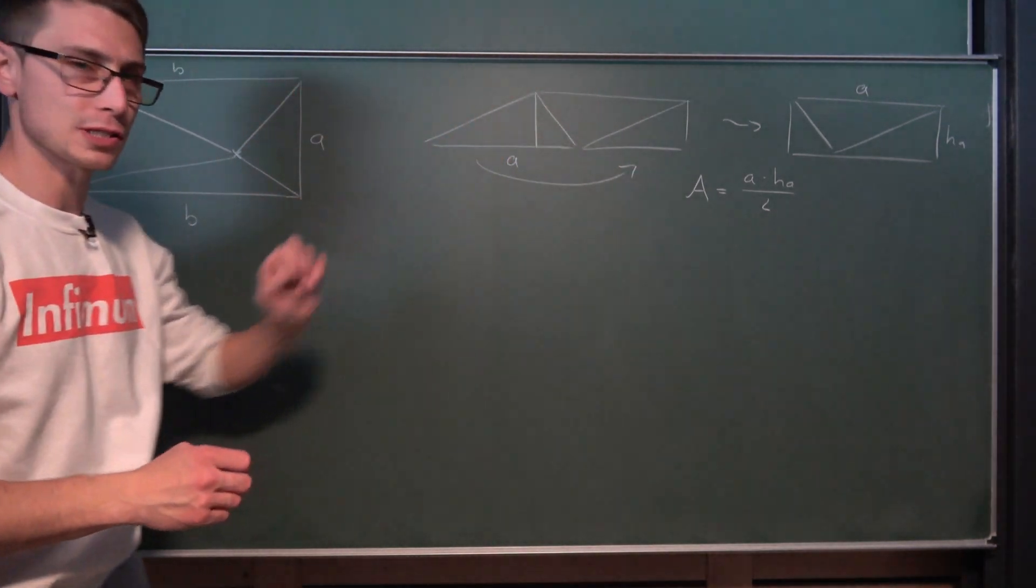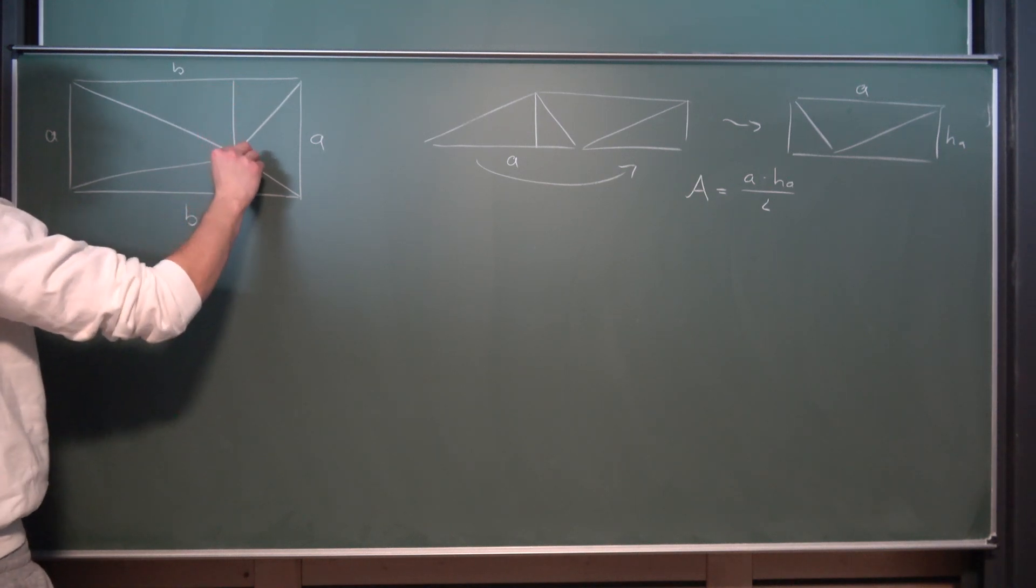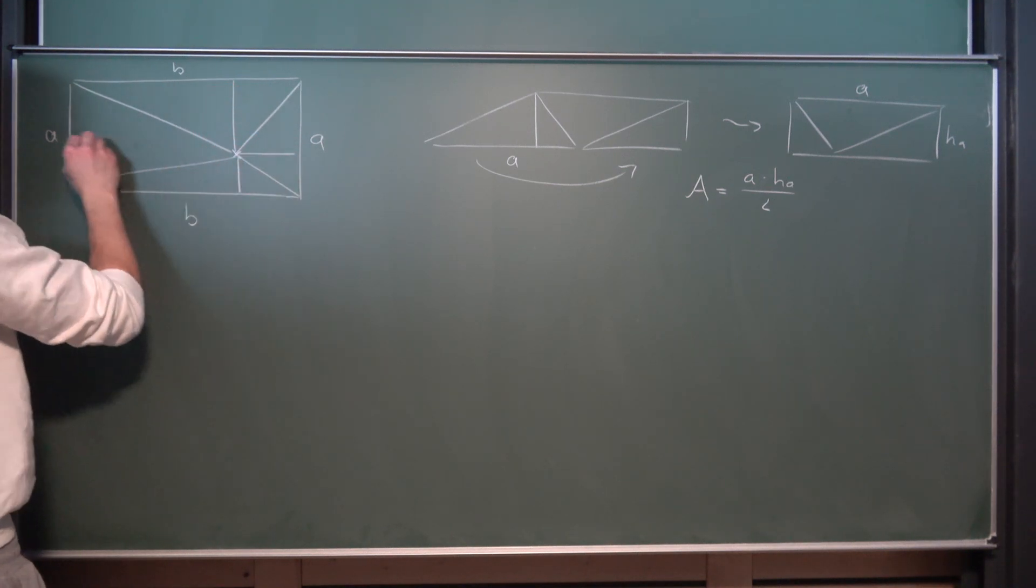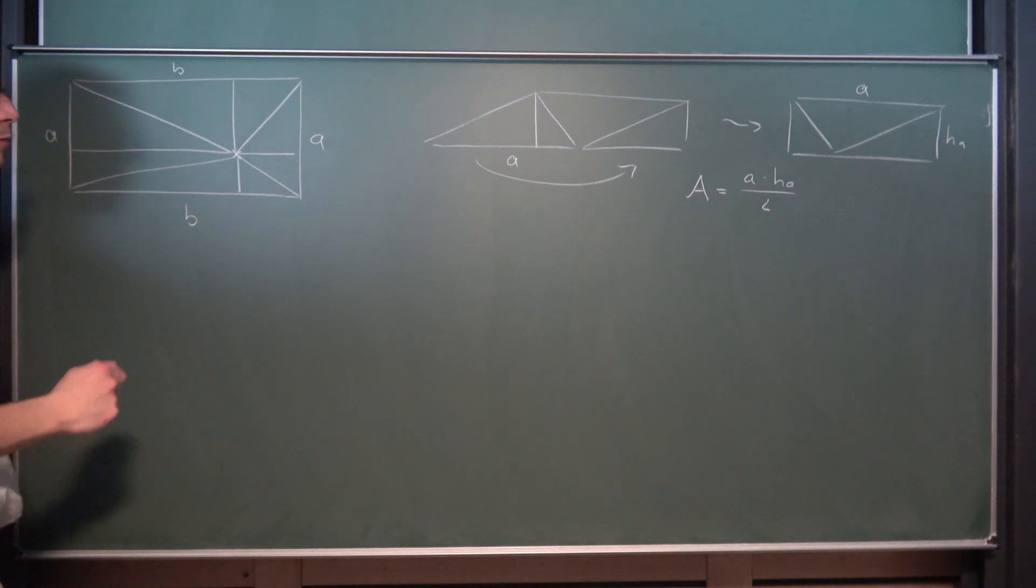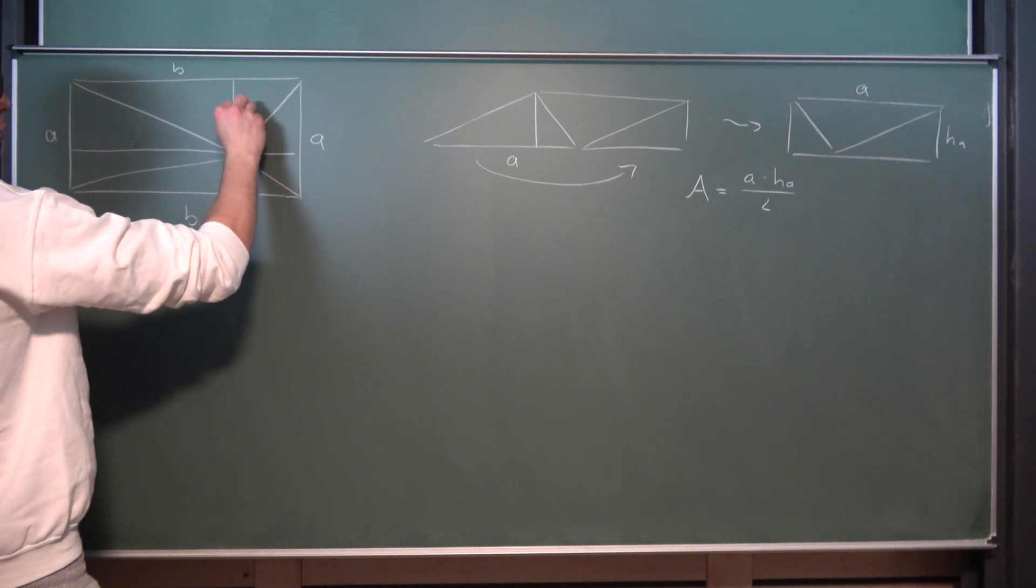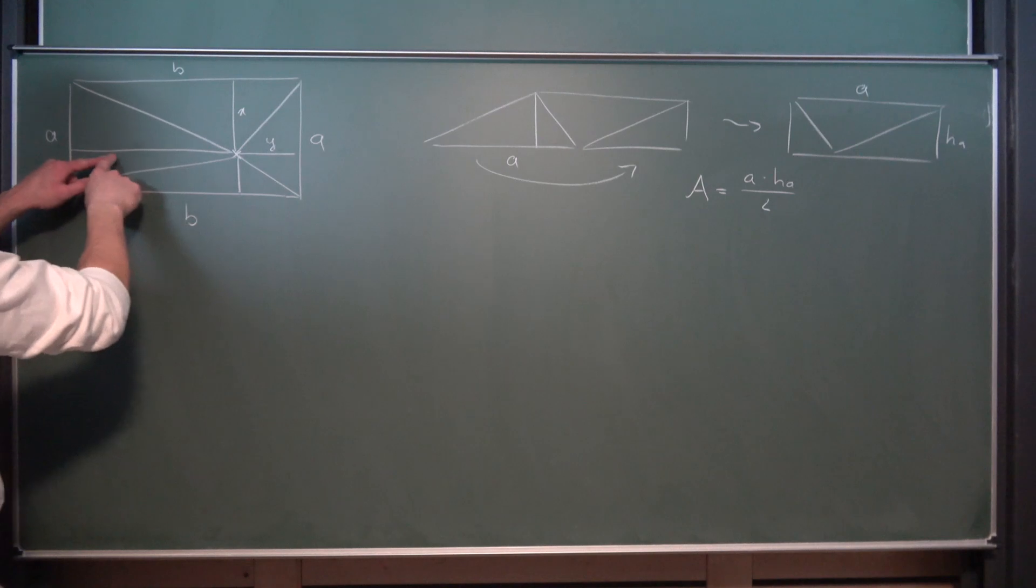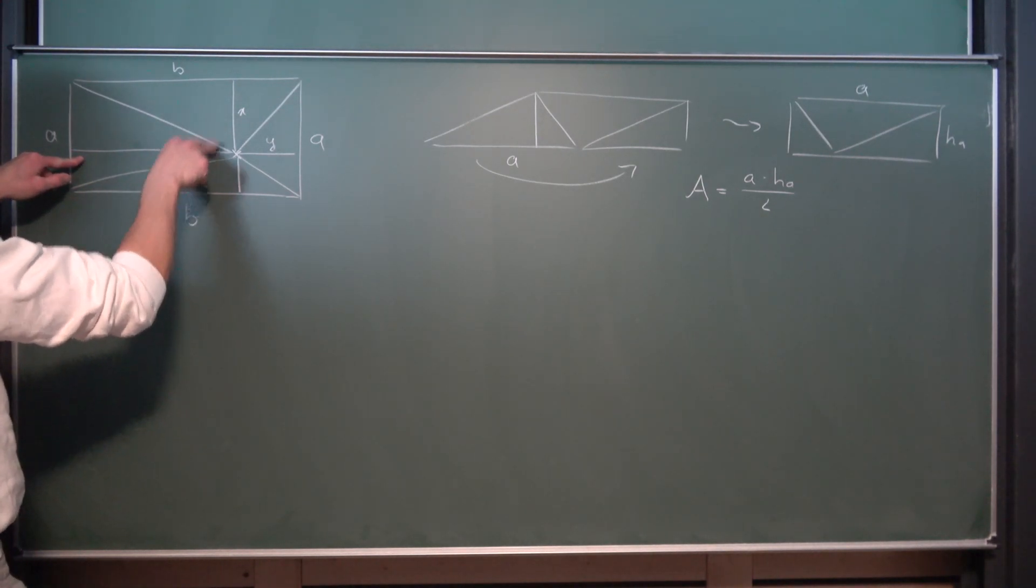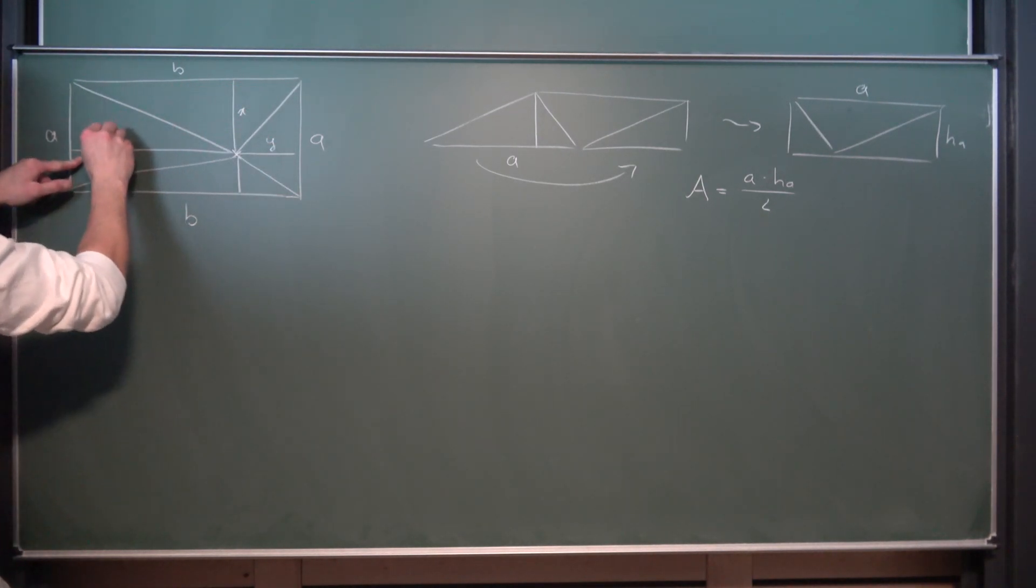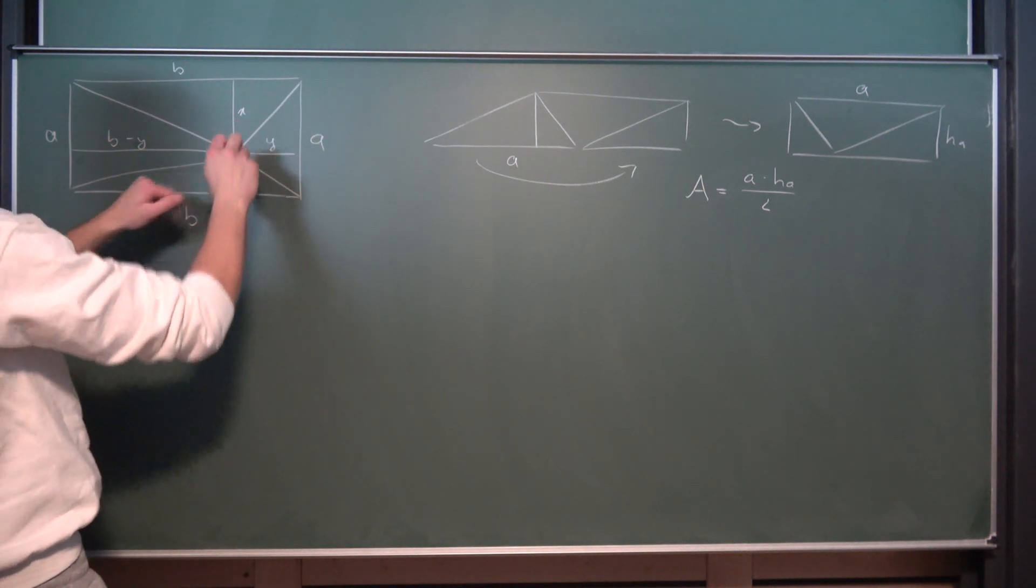And we are going to use this logic here. So what I'm going to do is I'm going to introduce a height here, a height here, a height here and a height here. And now this makes up for a nice little sketch. Now this height right here I'm going to call X and this right here I'm going to call Y. Meaning by this logic this height over here is going to be B minus Y. And this height here is going to be A minus X.